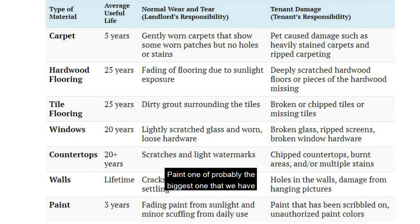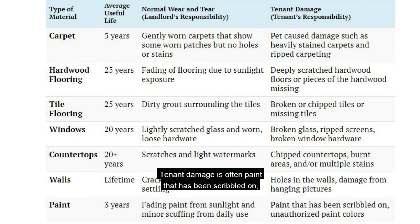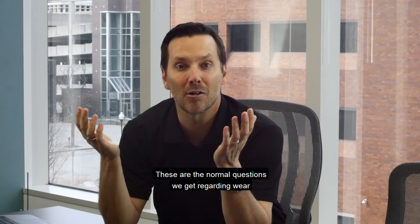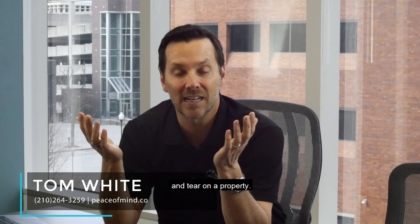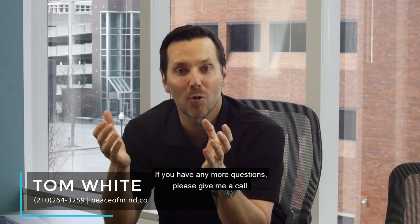Paint — probably one of the biggest ones — has a lifespan of about three years. Fading paint from sunlight, minor scuffing, and daily use is normal wear and tear. Tenant damage is paint that has been scribbled on or unauthorized paint colors. These are the normal questions we get regarding wear and tear on a property and what's a tenant's responsibility. If you have any more questions, please give me a call.